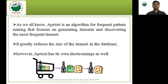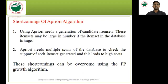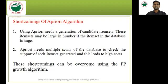Apriori greatly reduces the size of itemsets in the database, but it has its own shortcomings. The first disadvantage: Apriori needs generation of candidate itemsets, which may be large in number if the database is huge. The second disadvantage: Apriori needs multiple scans of the database to check the support of each generated itemset, which leads to high cost.